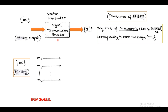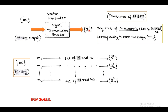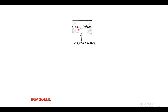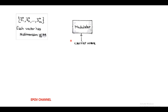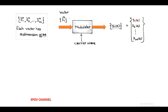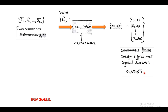The vector transmitter encodes each symbol m_i into a set of N real numbers called a signal vector, denoted by s suffix i vector. This s_i vector is also a sequence: s1 vector, s2 vector, up to s_M vector, and each vector has N dimensions, which must be less than or equal to capital M. In the transmitter, the modulator converts the vector sequence s_i vector into a sequence of finite energy signals as a function of time t, called s_i(t), equal to s1(t), s2(t), up to s_M(t), corresponding to continuous finite energy signals over a symbol duration 0 ≤ t ≤ capital T.